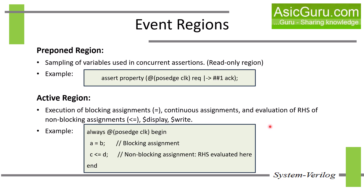In this example, A = B is a blocking assignment, so it executes immediately. The next statement is a non-blocking assignment — D is evaluated in the active region, but the actual update on C happens in the NBA region.